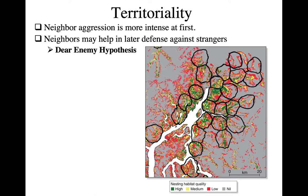The dear enemy hypothesis describes how competitors at neighboring territories will actually work together if some floater or outside individual who doesn't know the rules comes in and tries to take over one of the territories. You don't want your neighbor's territory taken over either, because if that happens you have to start from scratch, fighting the new individual and teaching them where the territory boundaries are.